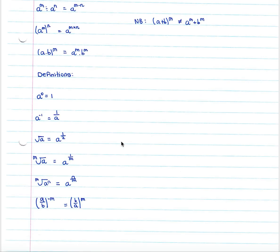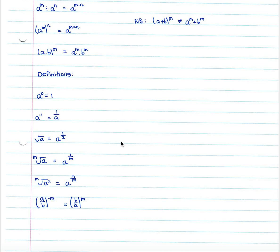It is also important to know all of the definitions in order to work through these easily and efficiently. Any variable raised to the power of zero is one — a hundred to the zero is one, x to the zero is one. Anything to a negative exponent is one over the variable to the same exponent, so a to the negative two would be one over a squared.